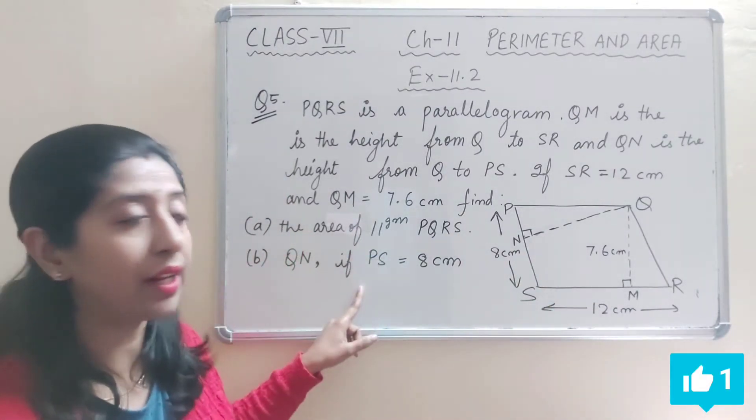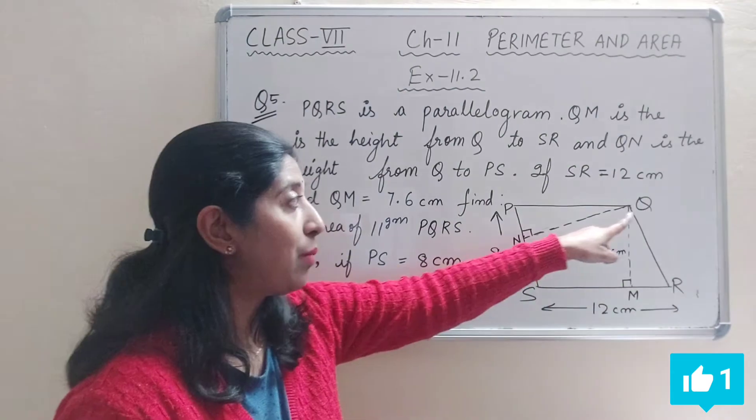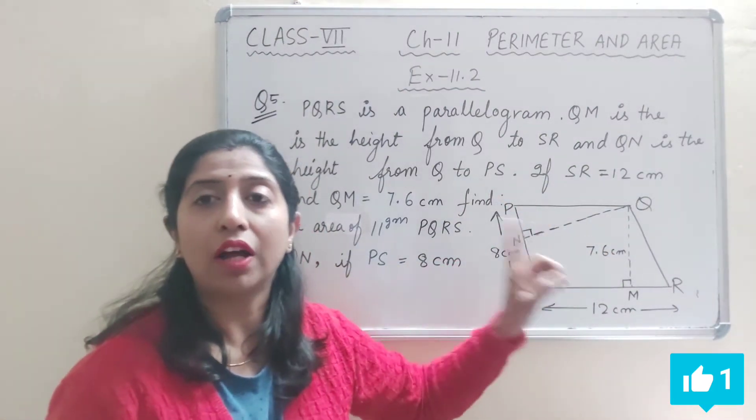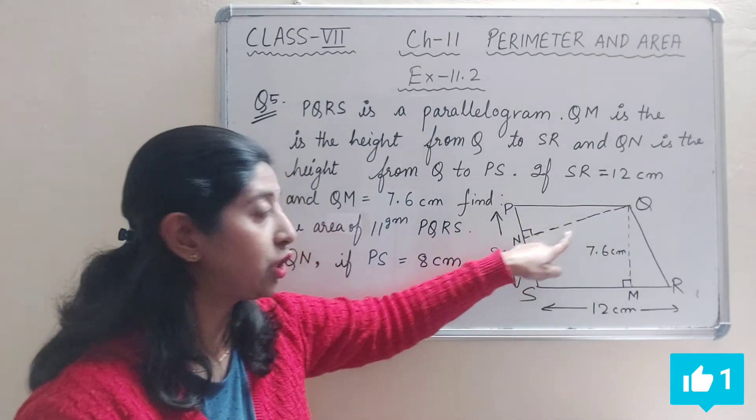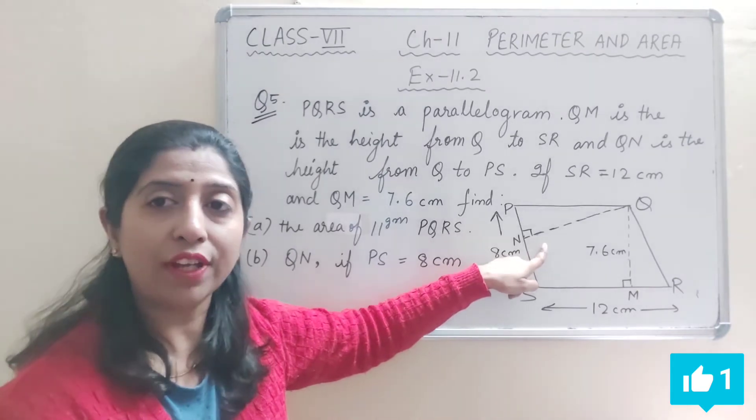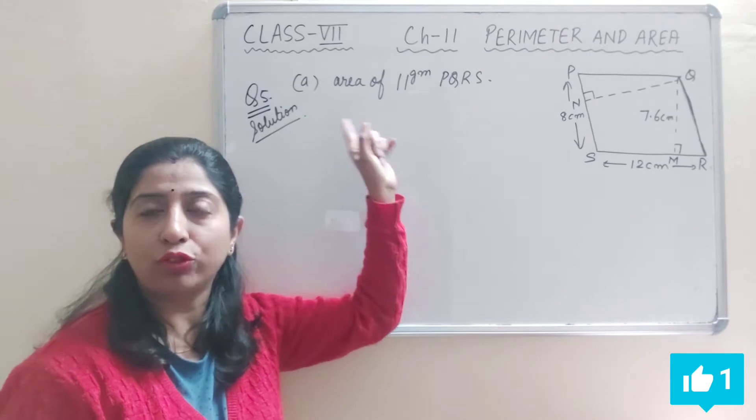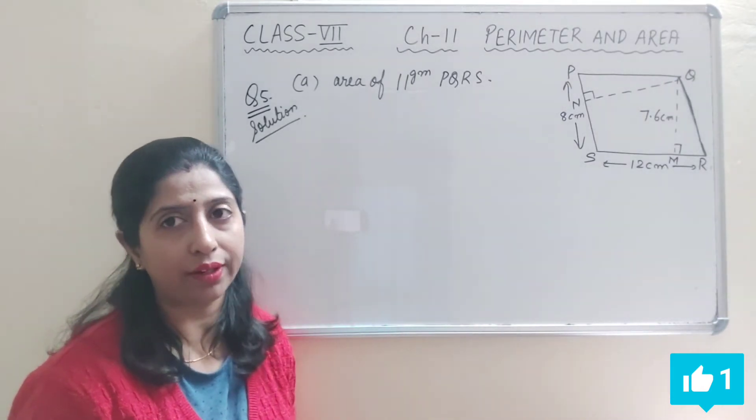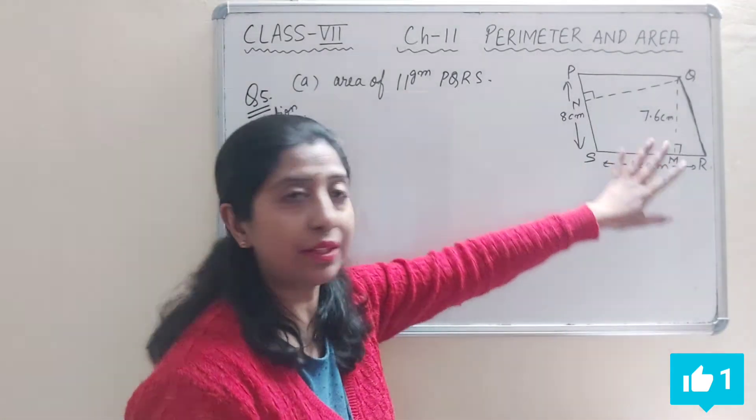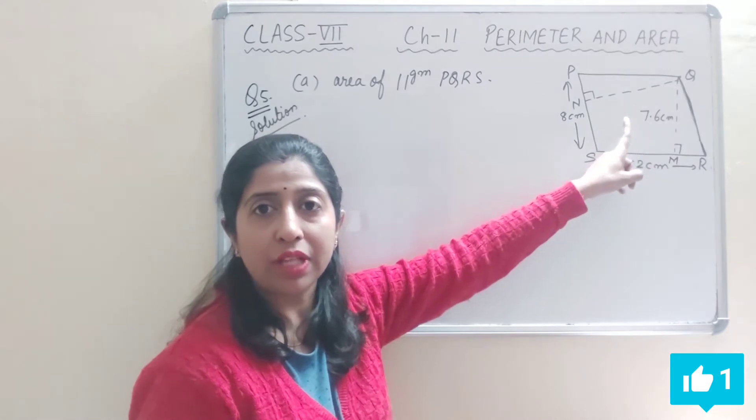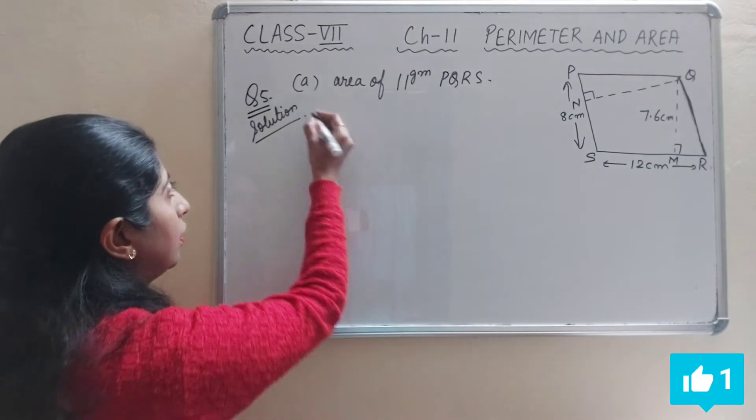The first part is connected - when we have to find the area, we will use this height and base. And then we will use the same area to find QN. So first of all we will solve part (a) where we have to find out the area of parallelogram PQRS. We will use this height and base and find out the area.